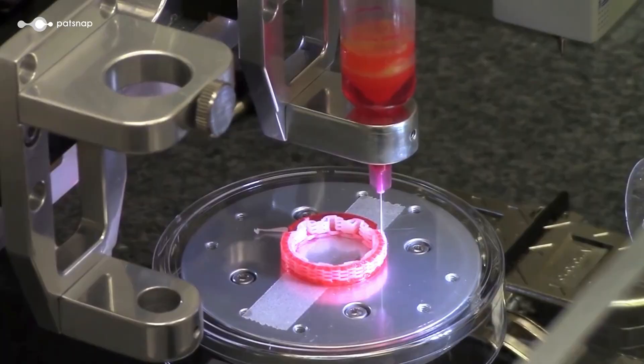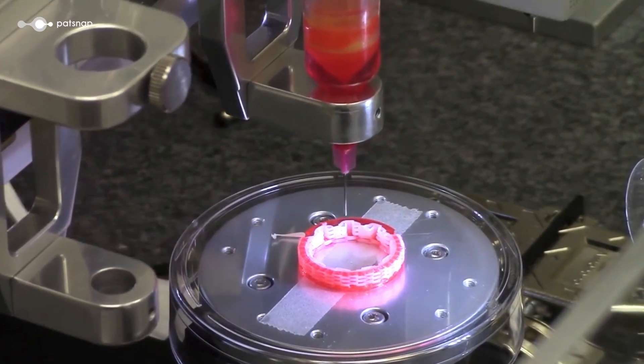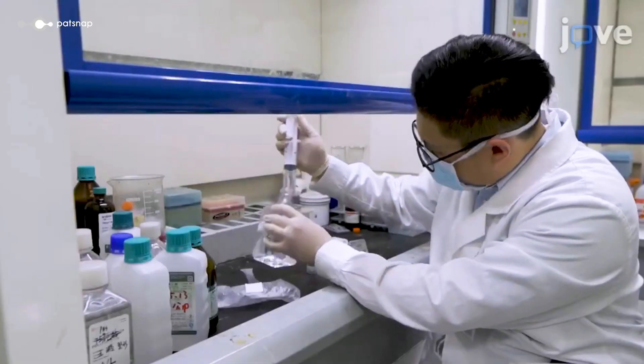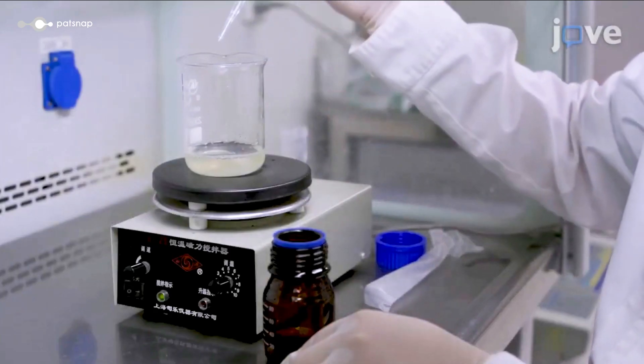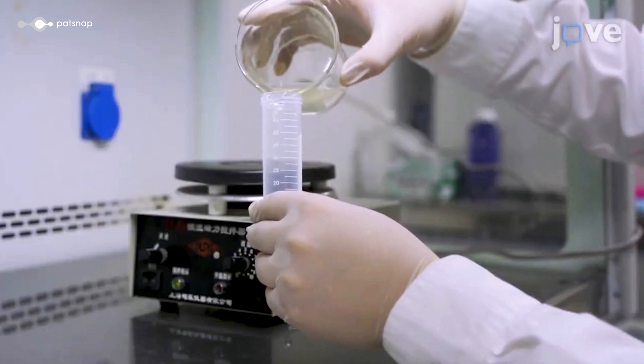But how do they do it? At the heart of bioprinting, we find a special material known as bioink. This isn't your ordinary ink. It's an incredible cocktail of cells, nutrients, and supportive matrices. Like a master painter blending colours on a palette, scientists can create an array of bioinks to form the intricate designs of life.